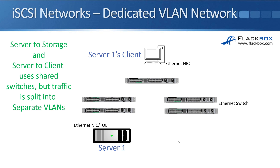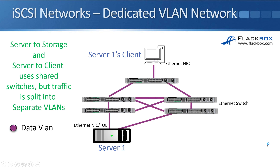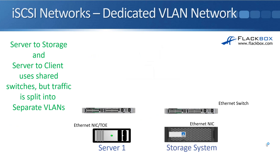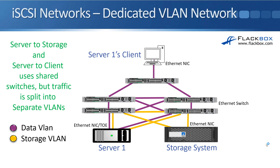In this example, with the server in the bottom left and the client at the top, the data network traffic is segregated into a data VLAN. When we add storage, it runs over the same shared physical switches, but storage traffic is placed in a separate storage VLAN. Using the same shared infrastructure, we can use the same or separate network cards on the server, with data and storage traffic split into different VLANs for performance and security reasons.